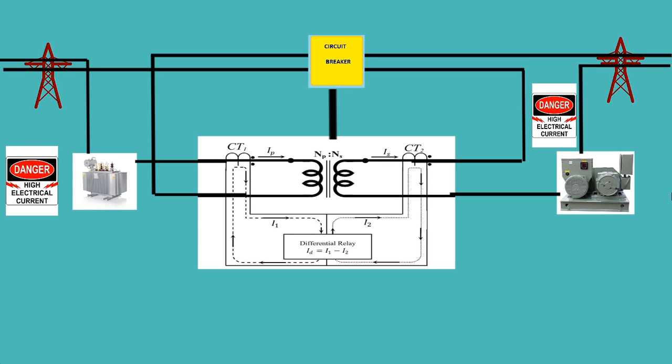The differential relay senses the difference in current and sends the tripping signal to the circuit breaker. This circuit breaker opens the connections to the transformer and motor, safeguarding the operations of these equipment since they are costly equipment in the power system.